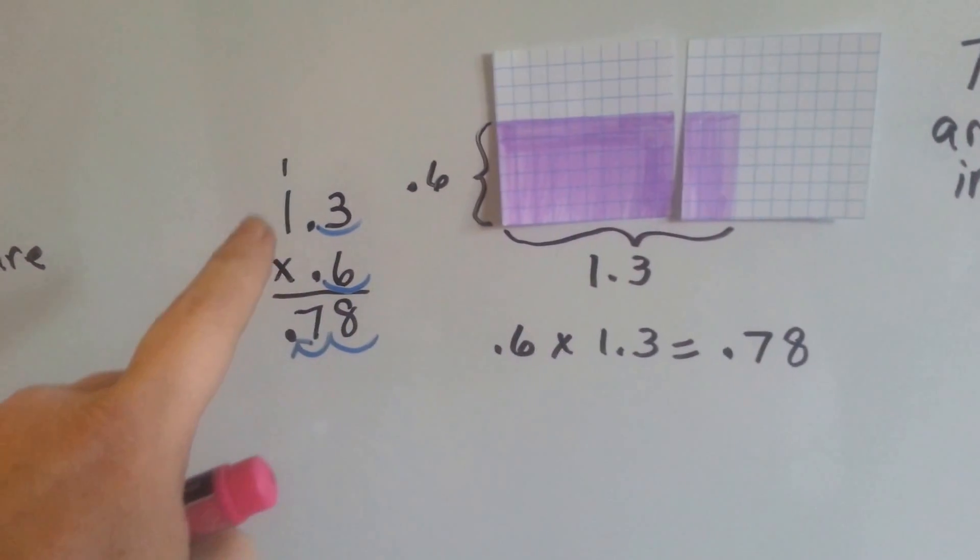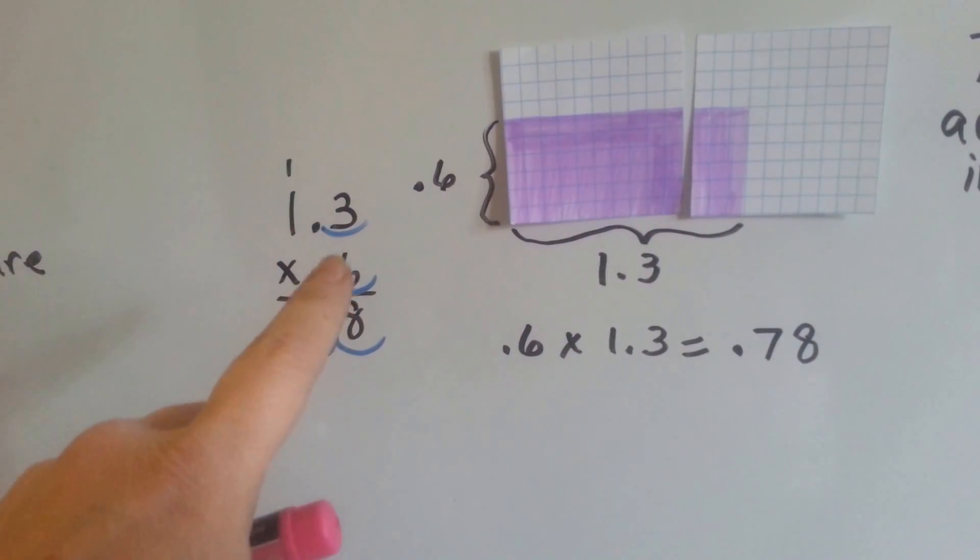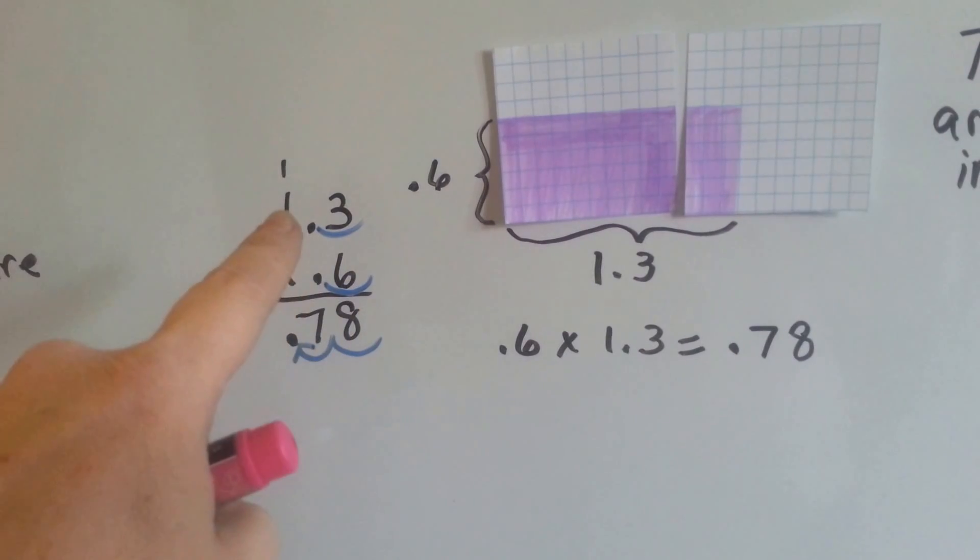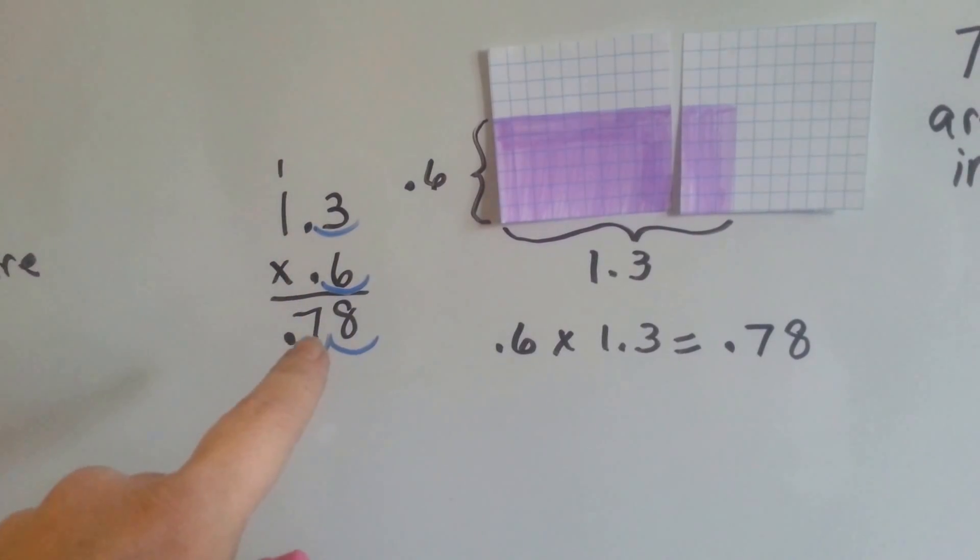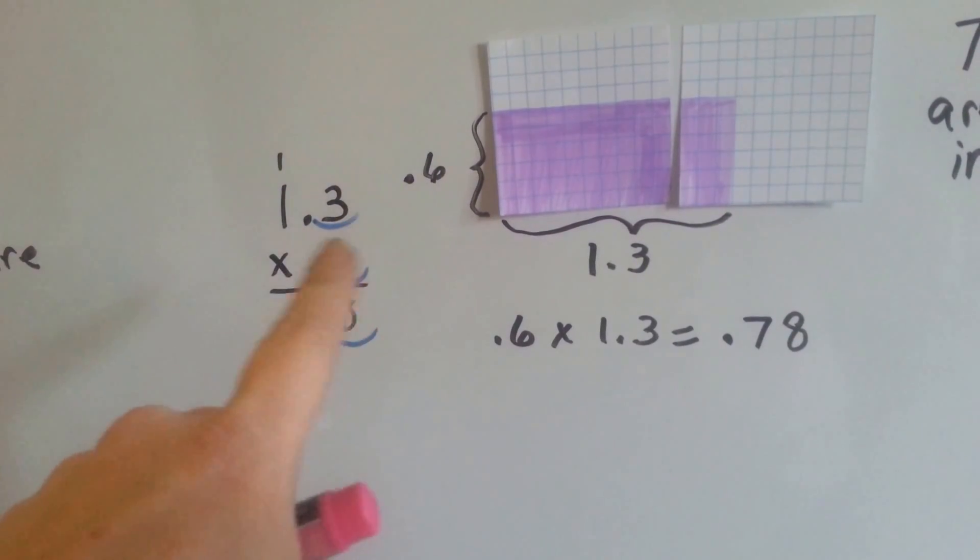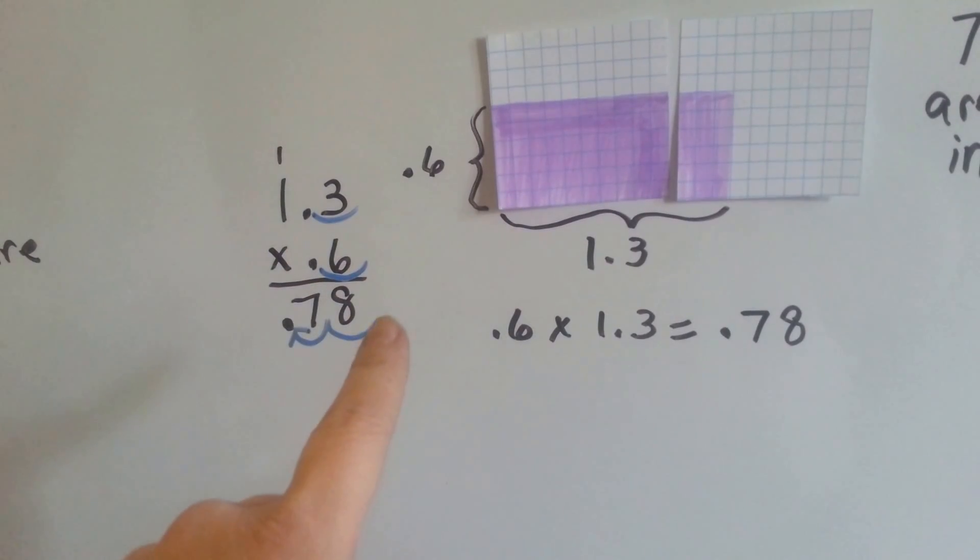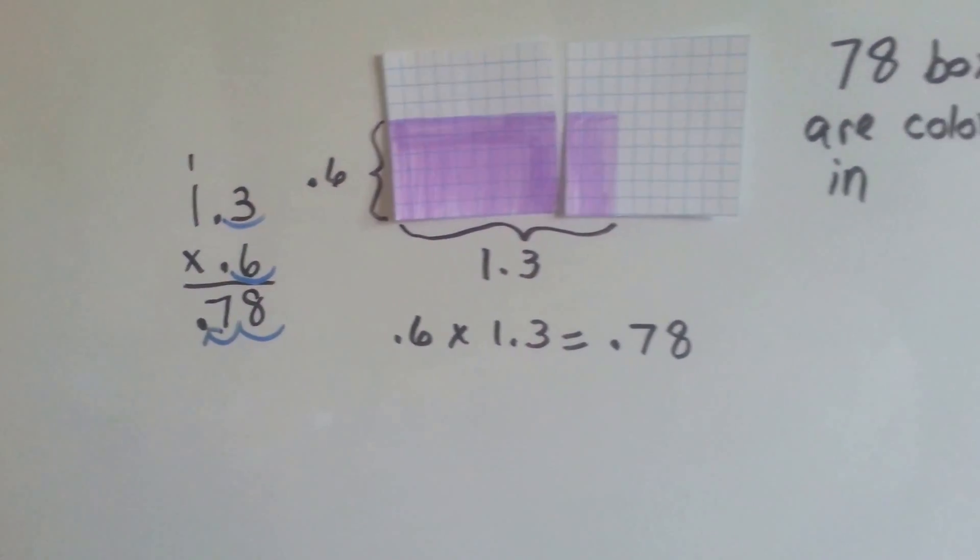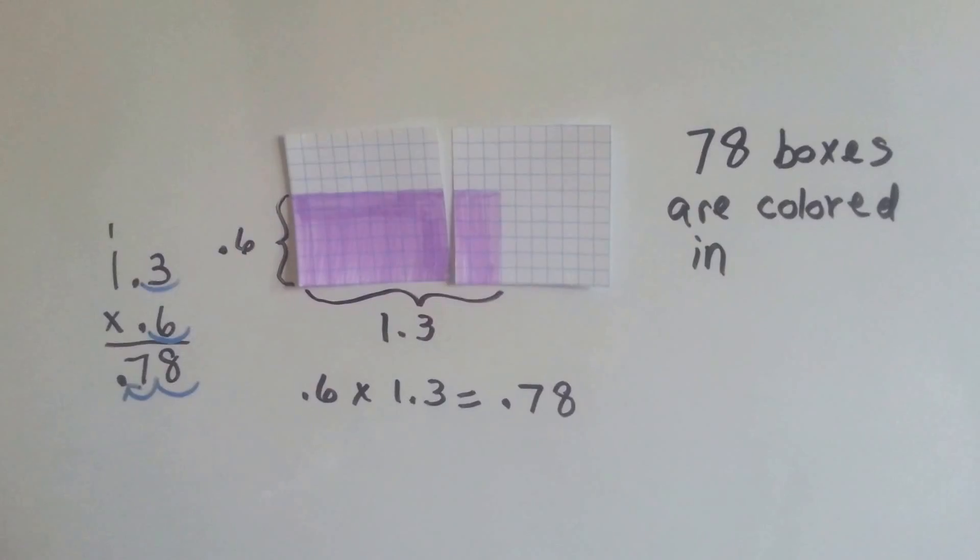When we do it the stacked way, 1 and 3 tenths times 6 tenths, 6 times 3 is 18, we carry the 1 and put the 8 down, 6 times 1 is 6 plus 1 is 7. How many times did we hop? 1, 2, so in the answer we've got 1, 2, so the answer is 78 hundredths, okay?